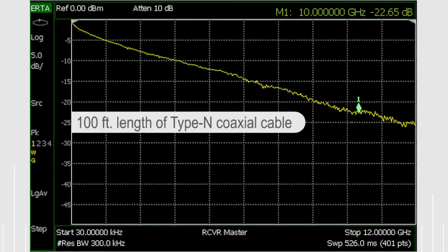Here we see loss through a long cable measured with IRTA. You can see that it sweeps from 30 kHz to 12 GHz in 526 milliseconds.